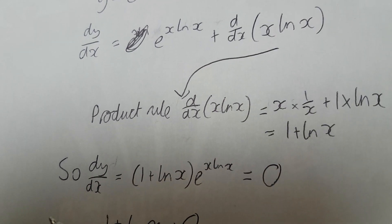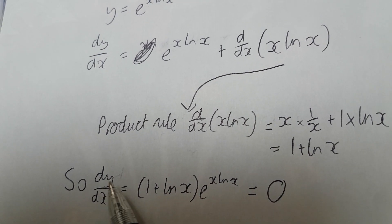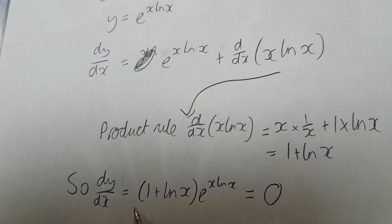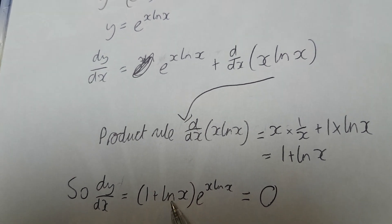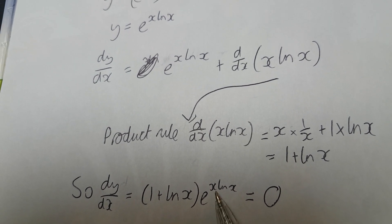So, to find the turning point, we know the turning point has a gradient of 0, so the first derivative equals 0. So we have 1 plus natural log x times e to the x natural log x. A bit confusing, but it's alright.